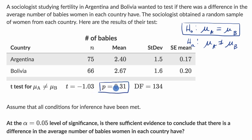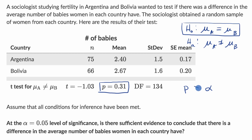We have a 0.31 probability — a 31% probability — of getting means this far apart. Now if your probability assuming the null hypothesis is below your level of significance, your alpha, then you would say that seems like such a low probability, I'll reject the null hypothesis, which suggests the alternative hypothesis. But in this situation, if we compare our p-value to our alpha, we see that our p-value is for sure greater than our alpha.